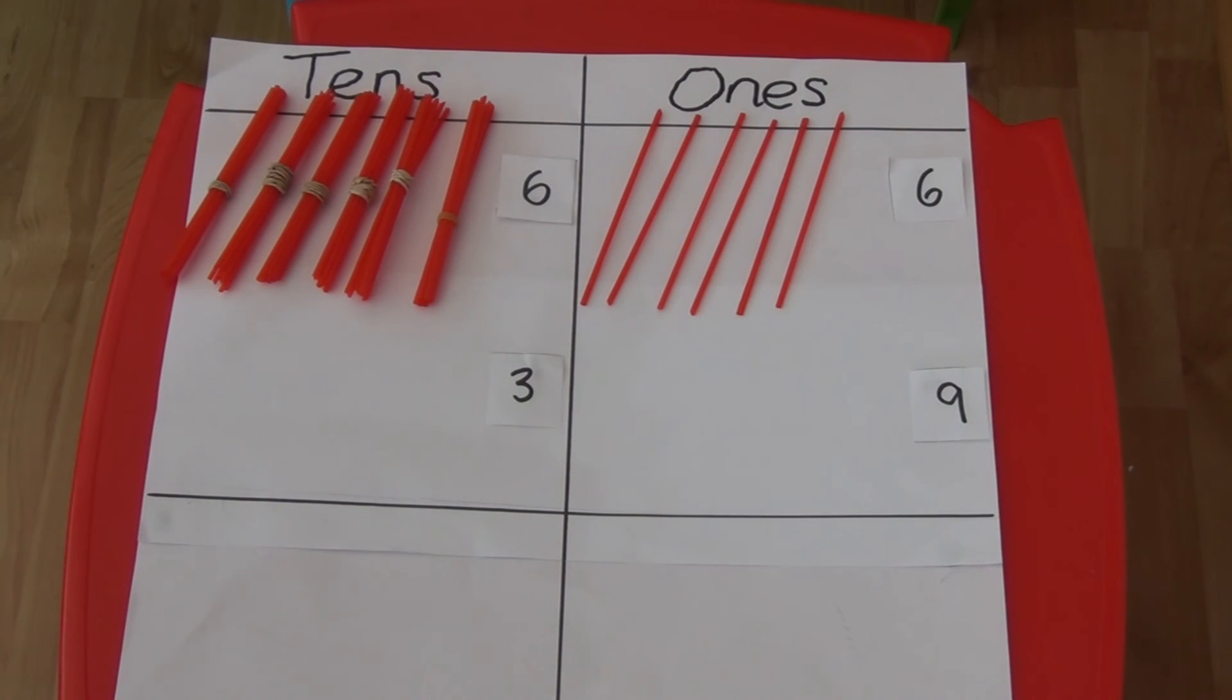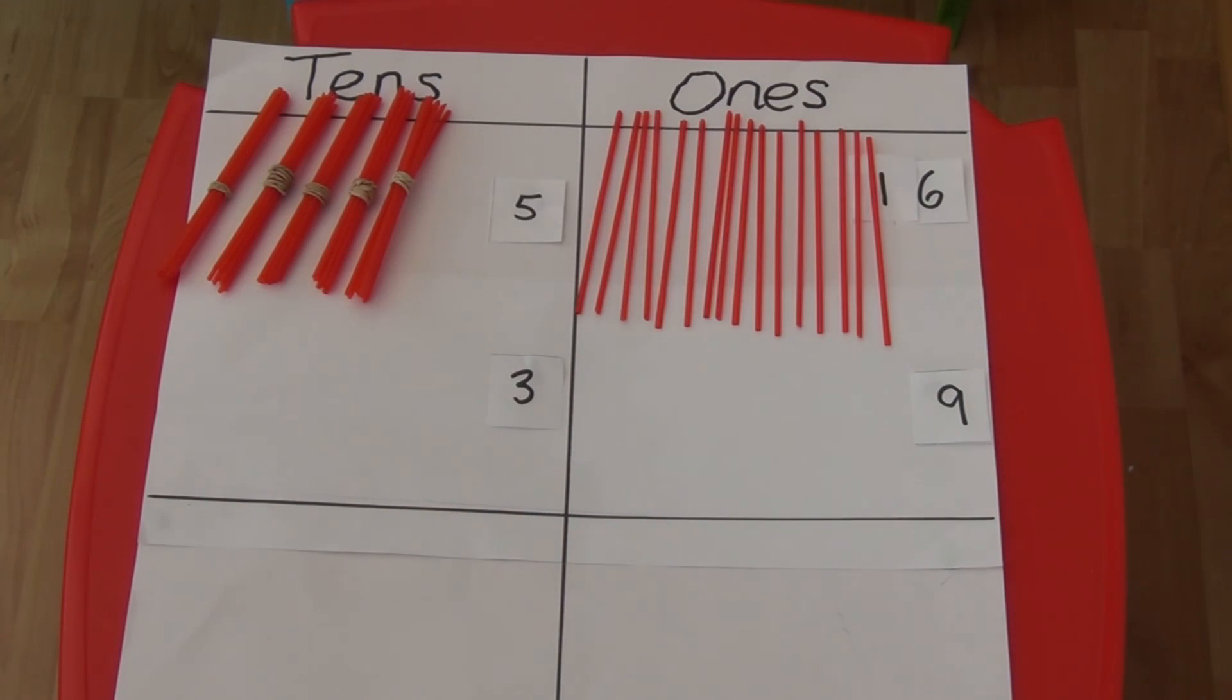For 66 we have 6 tens and 6 ones and I have stuck 3 underneath to show 39, which is 3 tens and 9 ones. This time we need to subtract 9 ones but we only have 6 ones so we have to exchange a 10 for 10 ones. We now have 5 tens and 16 ones.